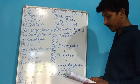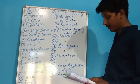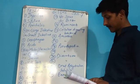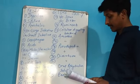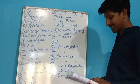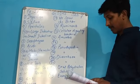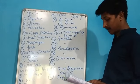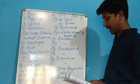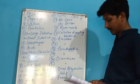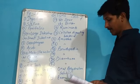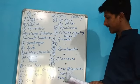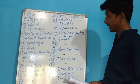Number three: name the process which moves the food forward in the food pipe as well as the whole alimentary canal. That is peristalsis. Number four A: where is the water from undigested food absorbed in the body? That is the large intestine. Number four B: where is the digested food absorbed into the blood? That is the small intestine.